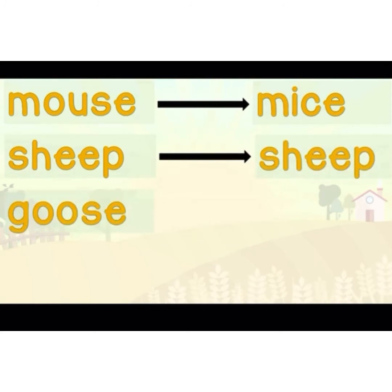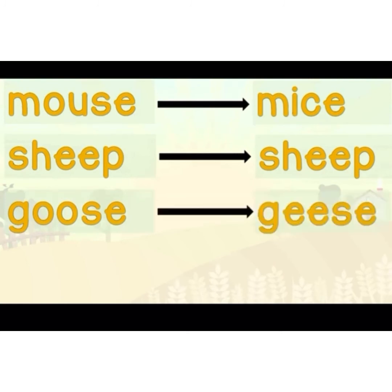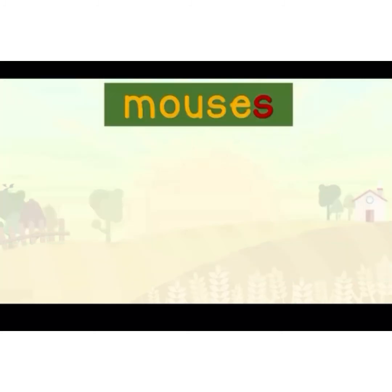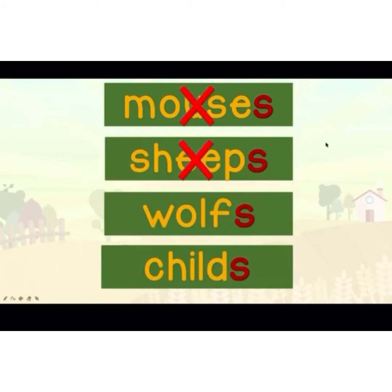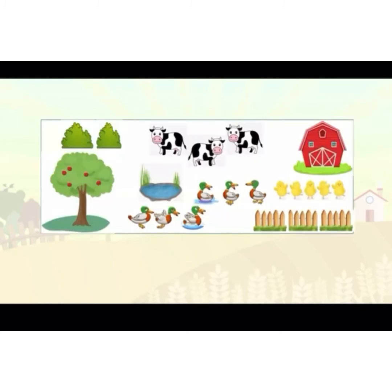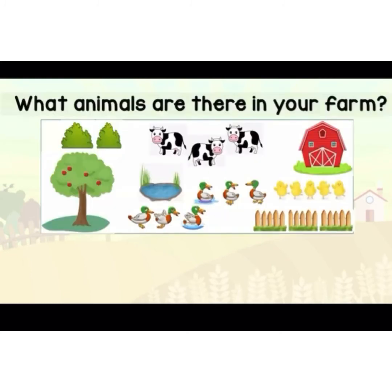Goose — itik putih yang macam swan tu — angsa. One goose, many geese. Child becomes children. So untuk irregular nouns, awak tak boleh letak macam biasa — mouses, sheeps, childs — tak boleh tambah 's'. Kena hafal. For regular nouns, biasa — awak boleh tambah 's' ataupun 'es'.